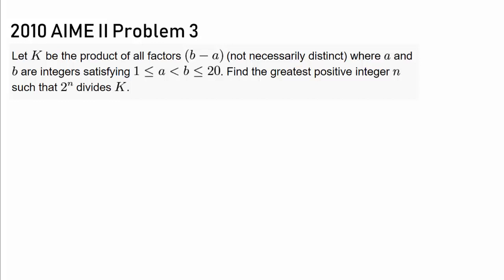Let k be the product of all the factors b minus a, not necessarily distinct, where a and b are integers satisfying 1 ≤ a < b ≤ 20. So we are picking two numbers a and b between 1 and 20 inclusive such that b is larger than a. Find the greatest positive integer n such that 2 to the nth power divides k — in other words, we want to find the number of 2s in the prime factorization of k.